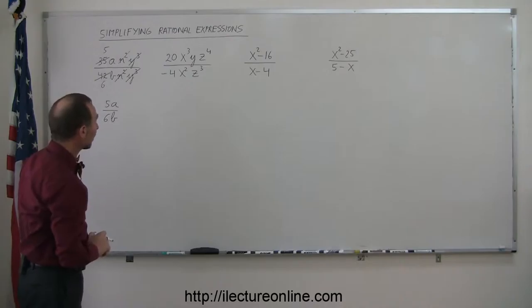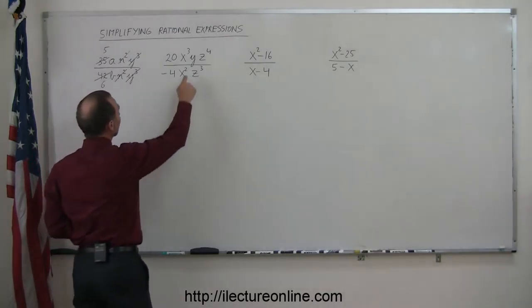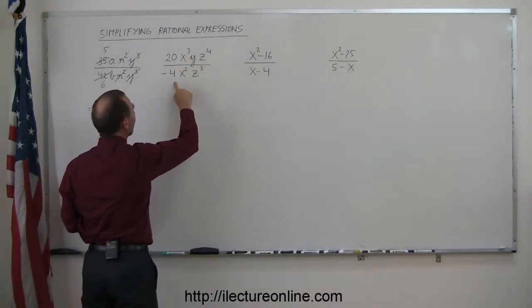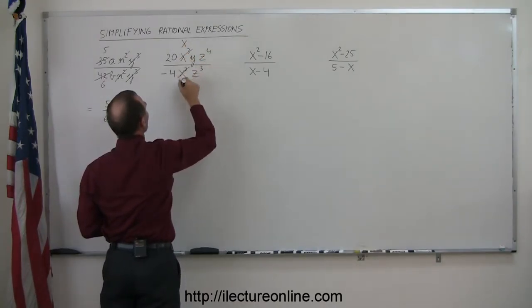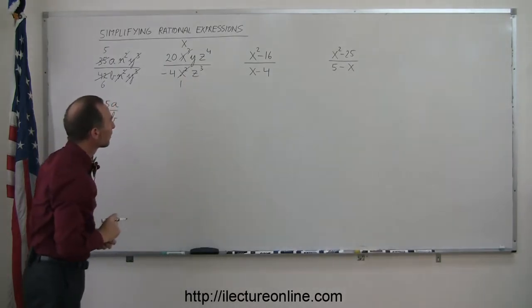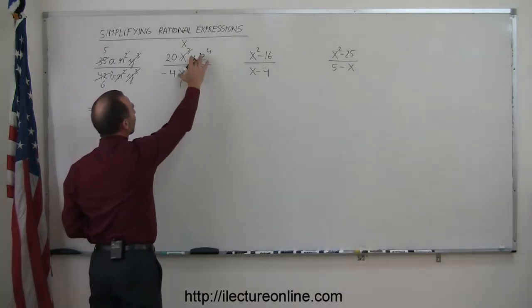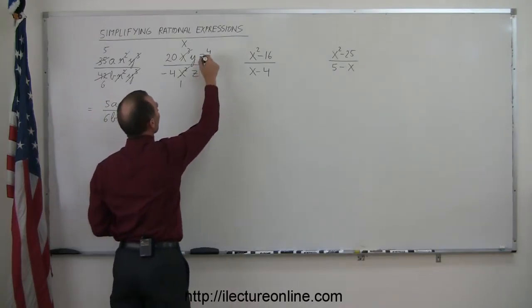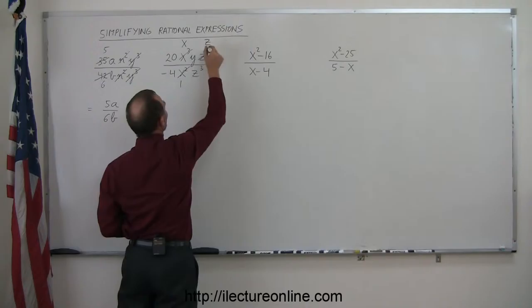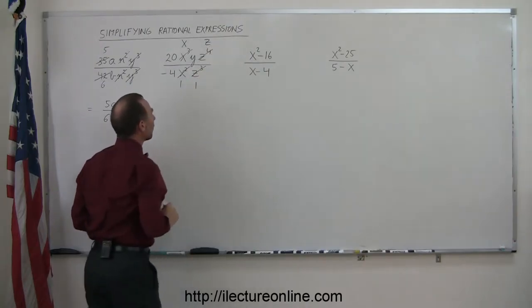All right, let's look at the second one. We have an x-cubed here and an x-squared. So I can then divide x-cubed by x-squared and I'm left with an x and this is simplified to just a 1. I have a y in the numerator, no y's in the denominator so I leave that alone. I have a z to the fourth and a z-cubed here. So z to the fourth cancels out to a z. Z-cubed cancels out to a 1.